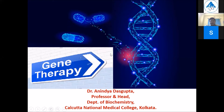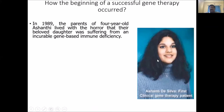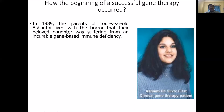We start with gene therapy by looking at this photograph. She is the first human being to be treated successfully with the novel idea of gene therapy. Her name is Ashanti De Silva — I use the present tense because she is still alive now. She received the first clinical gene therapy. Her history is very interesting: in 1989, the parents of four-year-old Ashanti lived with the horror that their beloved daughter was suffering from an incurable gene-based immune deficiency.